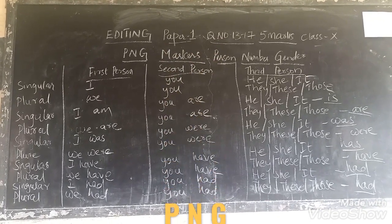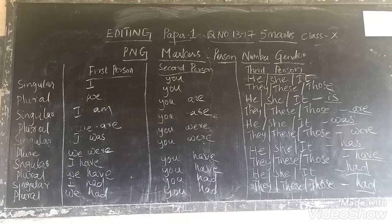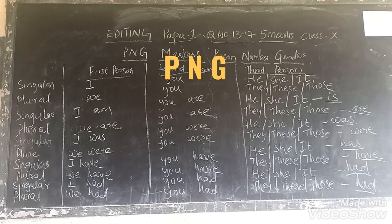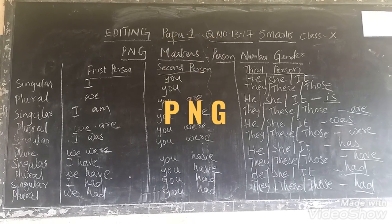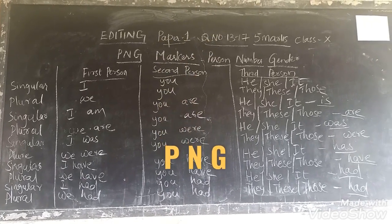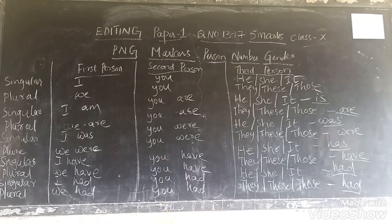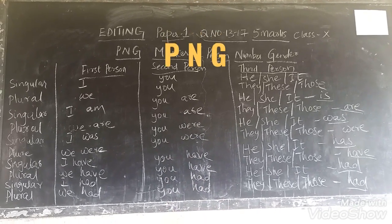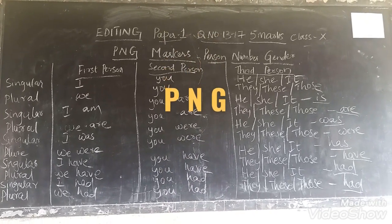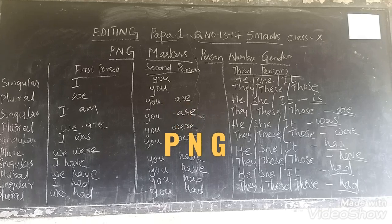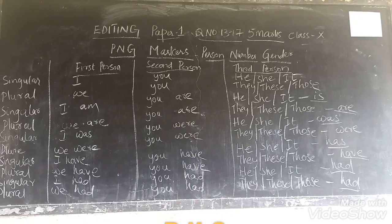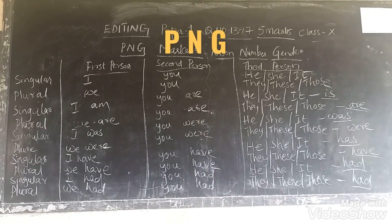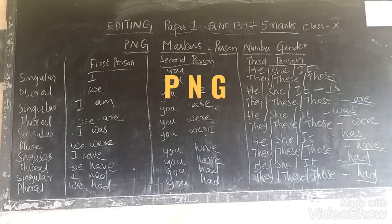If the sentence is in past perfect, we use: I had, we had, you had. For third person: he had, she had, it had. Similarly, they had, these had, those had. So this is the agreement between the person and the number.